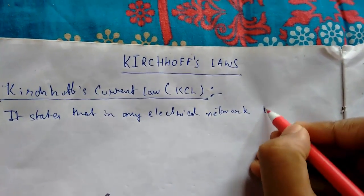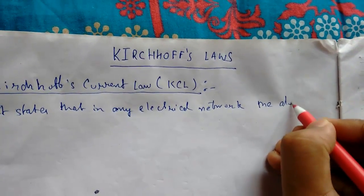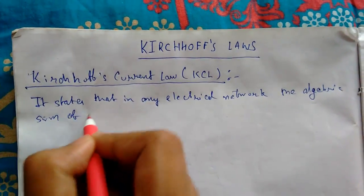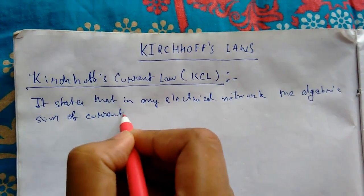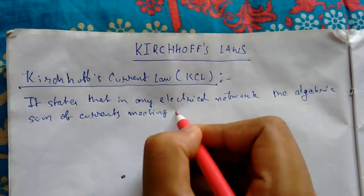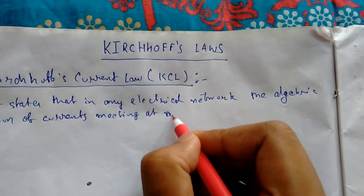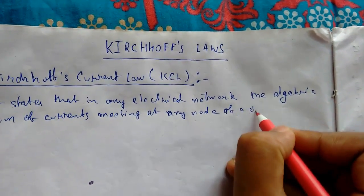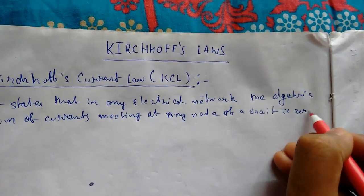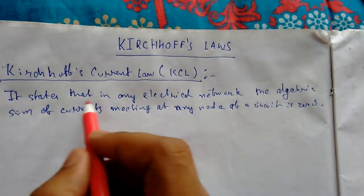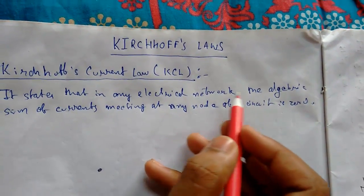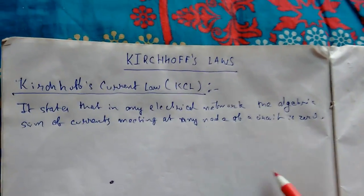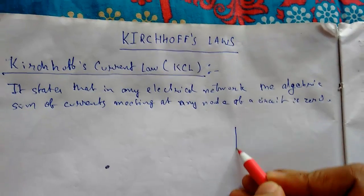the algebraic sum of currents meeting at any node of a circuit is zero. So this is Kirchhoff's current law: at any electrical network, the algebraic sum of currents meeting at any node of a circuit is zero.